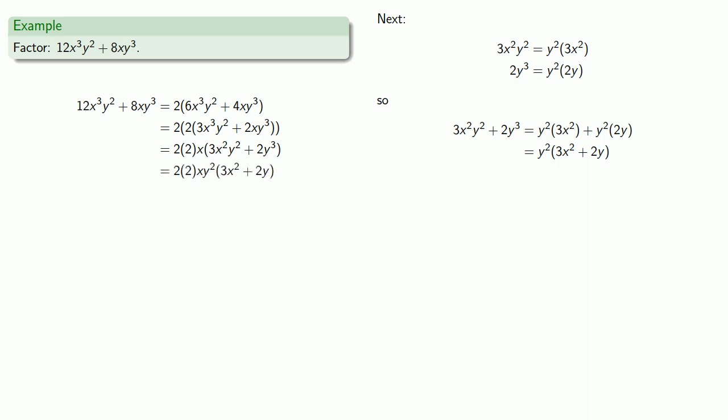We still have a sum, 3X squared plus 2Y, so it's possible we might be able to factor this further. But if we look closely, these two terms do not have any common factors, so it looks like we're done. However, it's traditional to multiply the constants together. We can multiply this 2 times 2 to get our final form of the factorization.